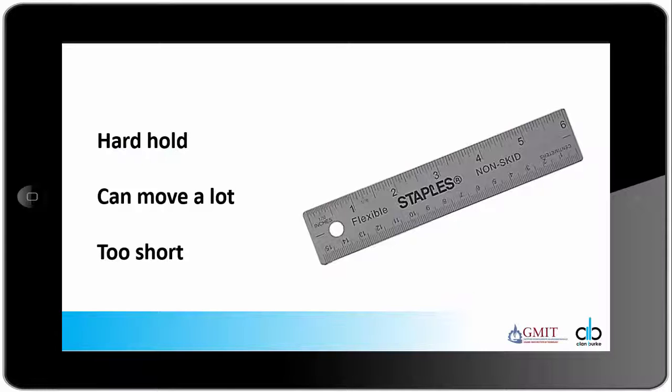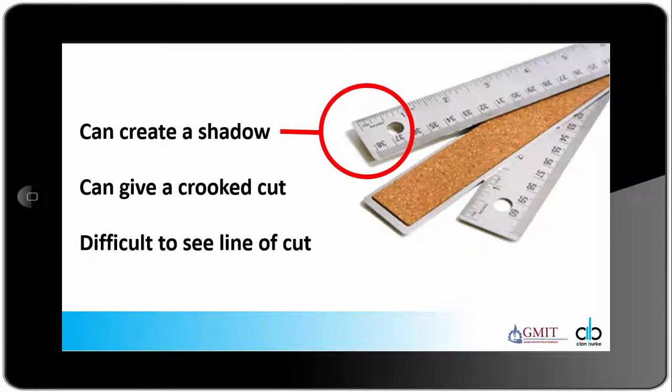The smaller ones are harder to hold. They can tend to move quite a lot because they are too short. When a ruler has a cork backing it is raised up off the material. This can often create a shadow. This shadow can give a crooked cut and it makes it difficult to see the line that you are actually trying to cut to.